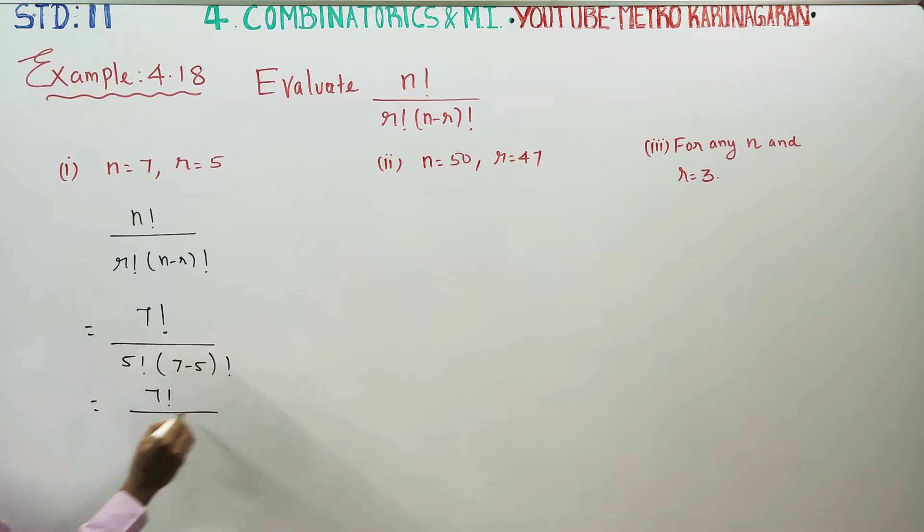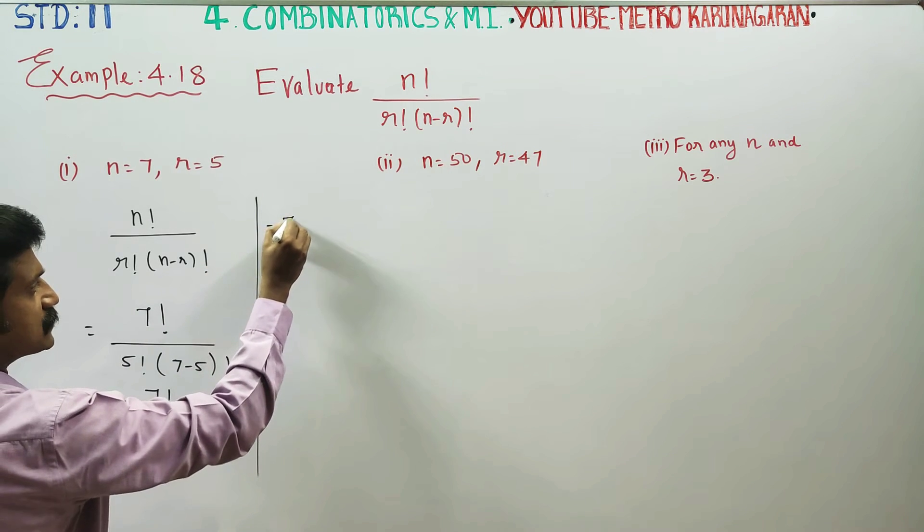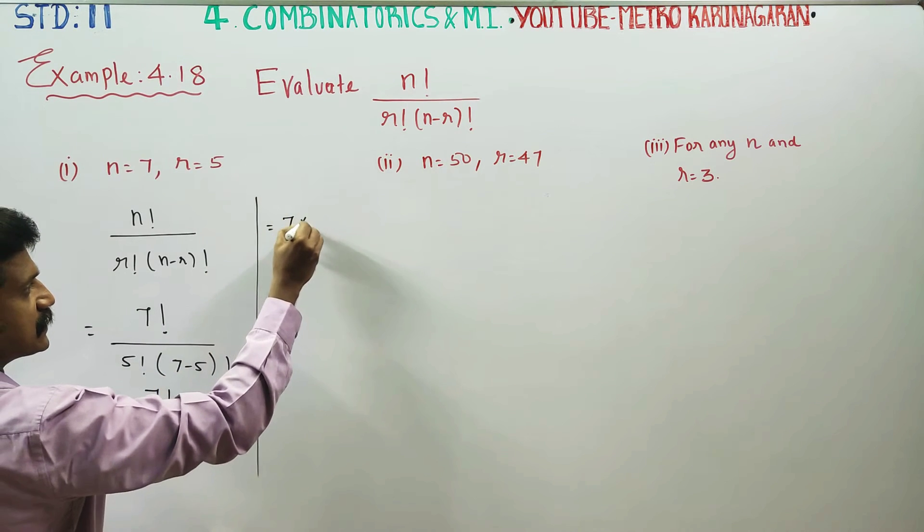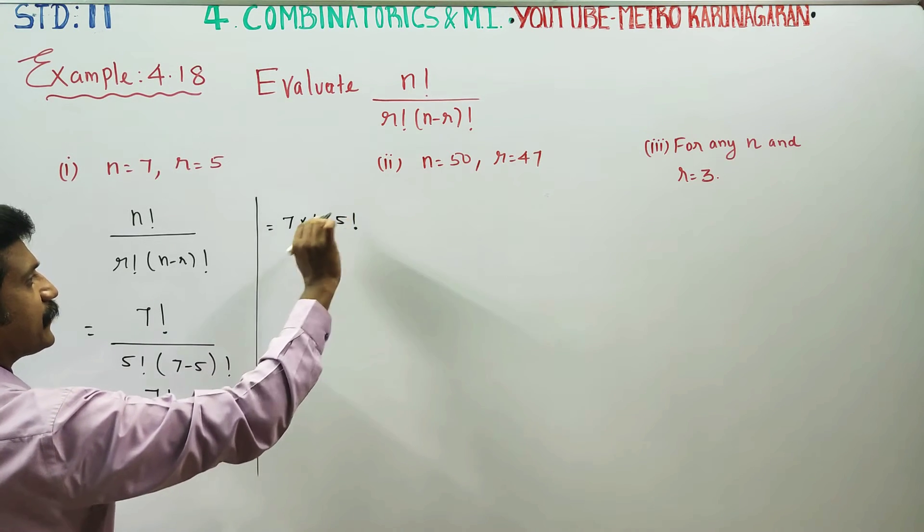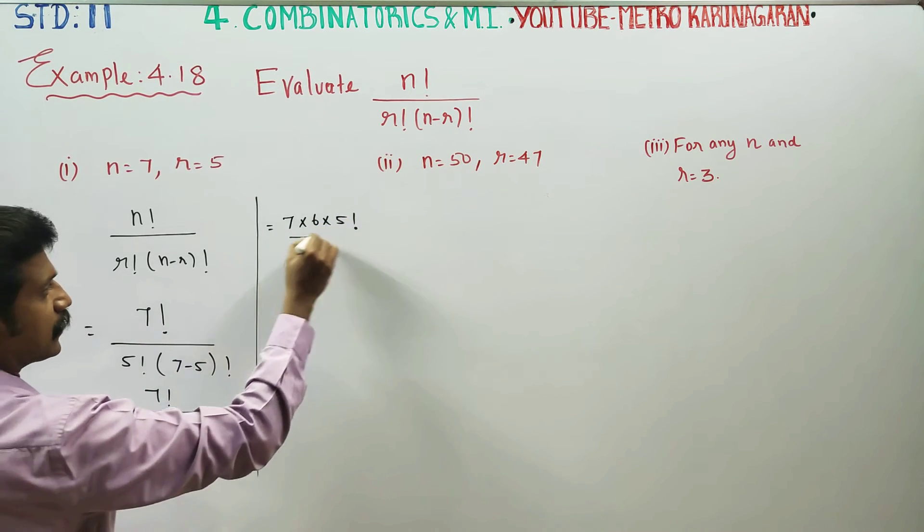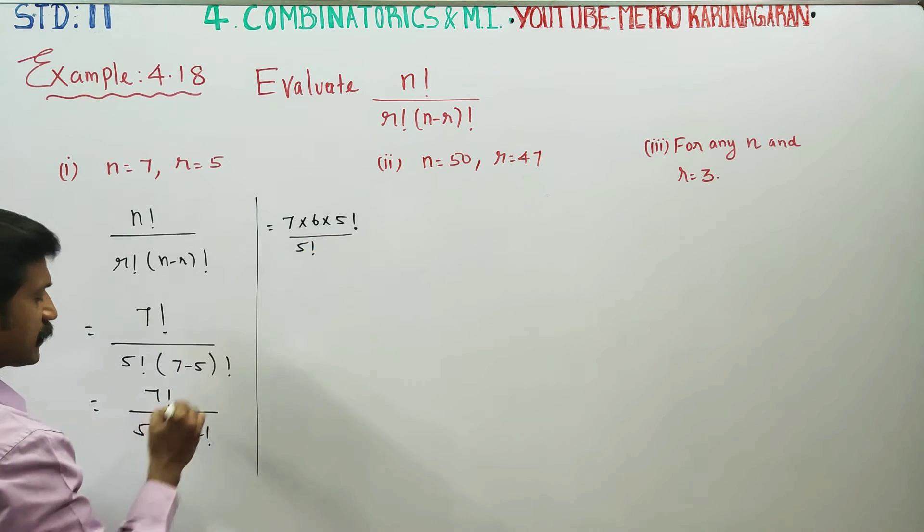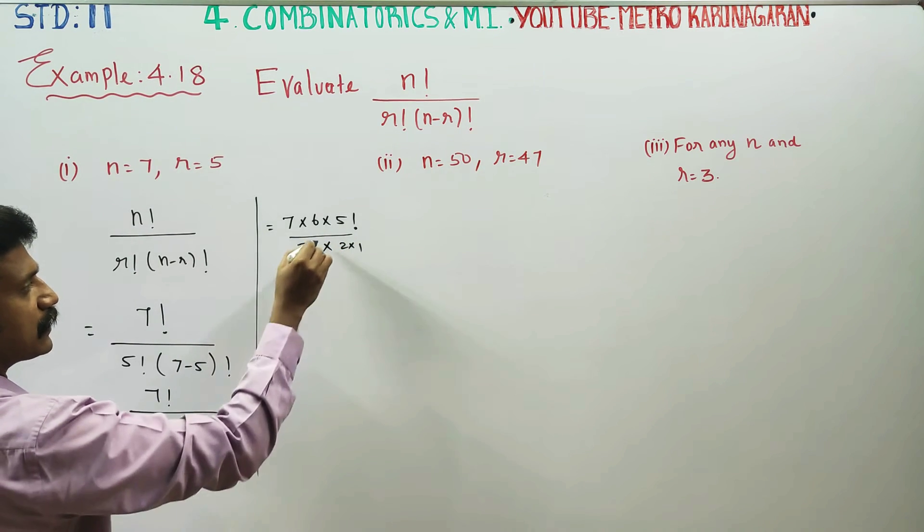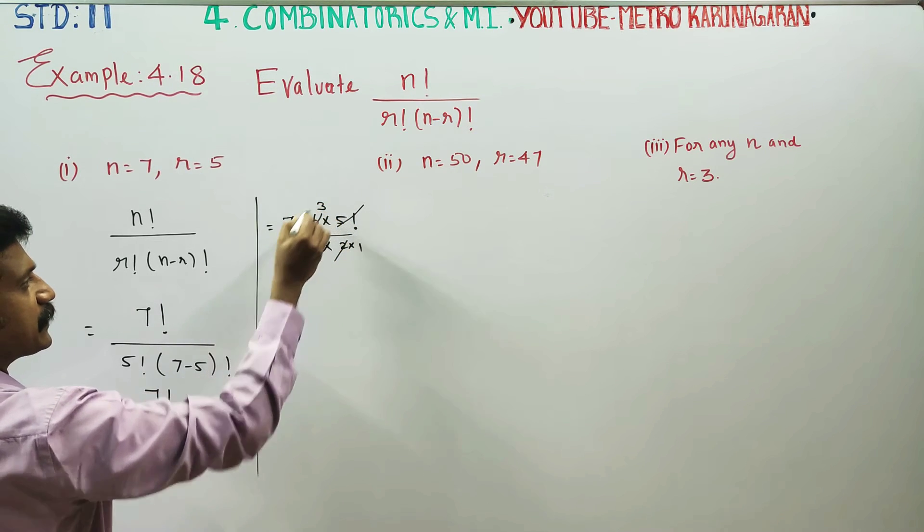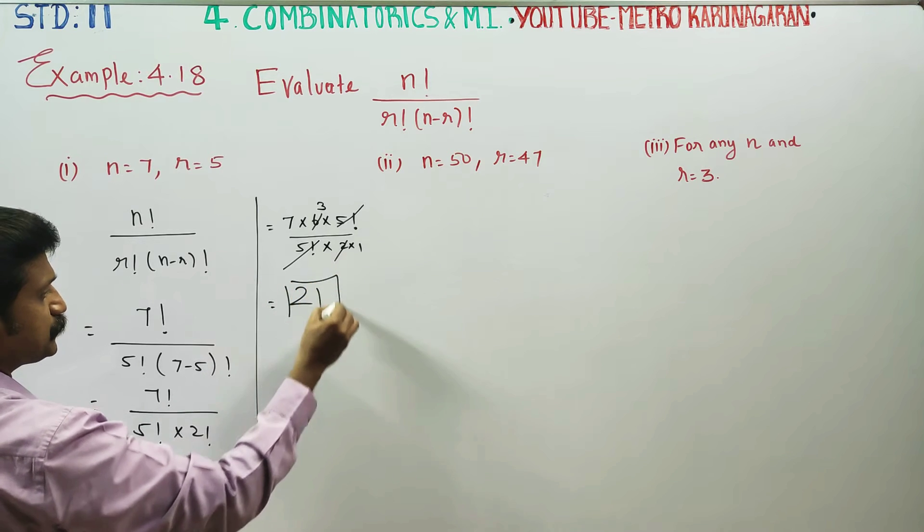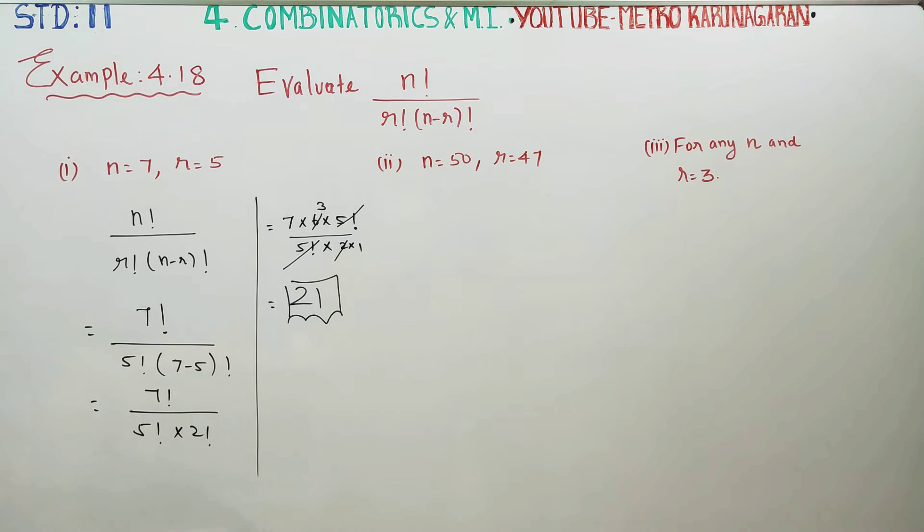Then 7 factorial by 5 factorial, 7 minus 5 is 2 factorial. So if you have to simplify it, answer is ready. 7 factorial can be written as 7 into 6 into 5. This one stop and open. 5 factorial is stop and open. Denominator 5 factorial is 2 into 1. 5 factorial cancel. 2 tables, 3 times cancel. 7, 3 is r. 21 is your first answer.